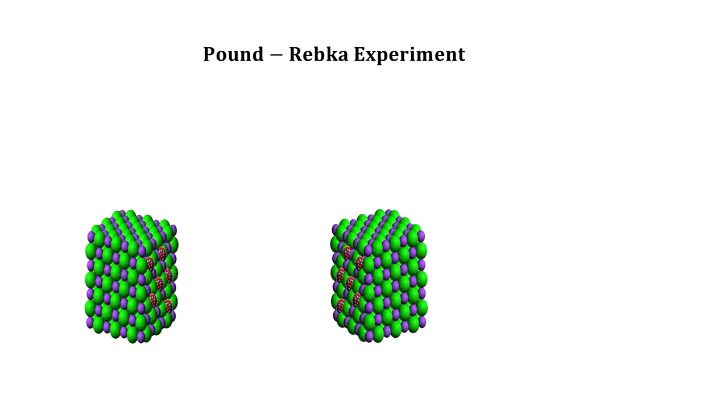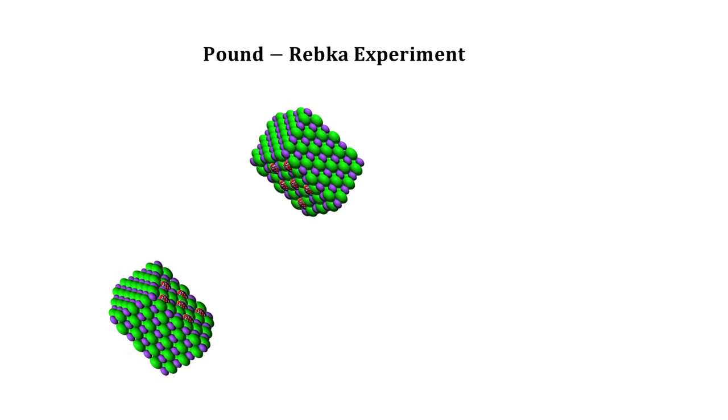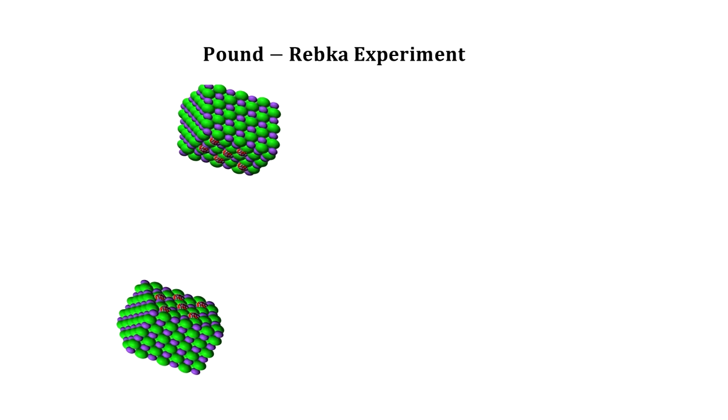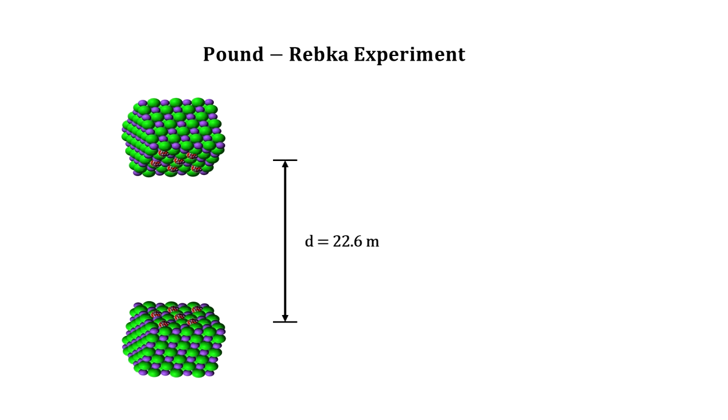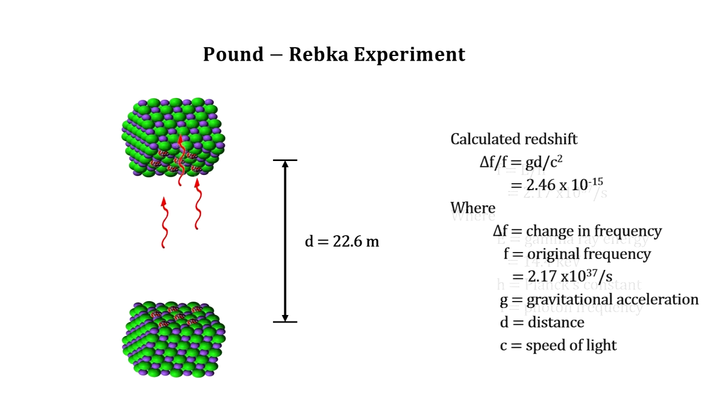Pound-Rebka used this Mössbauer effect. They placed an emitter at the bottom of a tower in the laboratory and installed a detector 22.6 meters above it. No absorption was detected, because gravitational time dilation changed the frequency of the emitted gamma rays, so no energy match existed in the detector. The calculated shift was extremely small, but the Mössbauer effect is sensitive enough to measure it.